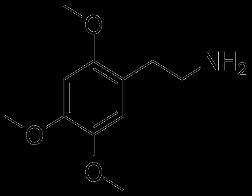Chemistry: 2CO is a member of a class of chemical compounds commonly known as phenethylamines. Its full chemical name is 2-(2,4,5-trimethoxyphenyl)ethanamine. It is also known as 2,4,5-trimethoxyphenethylamine and 2,4,5-TMPEA.